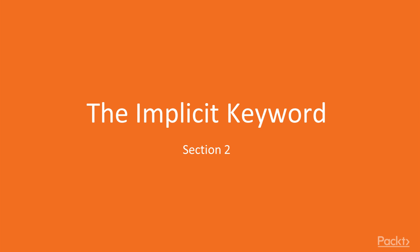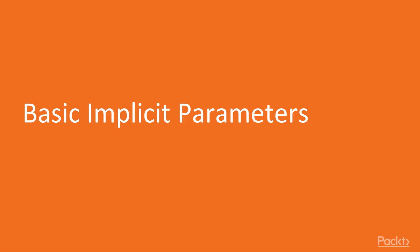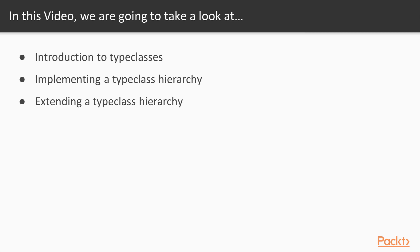Welcome back. In this section, we're going to be discussing the implicit keyword. First, we're going to talk about basic implicit parameters. Then we'll talk about how implicit parameters work together with other features to bring us type classes. Finally, we're going to talk about implicit classes and object extensions. Let's start with basic implicit parameters — how the compiler treats them, a high-level overview of how implicit resolution works, and why we would use implicits at all.